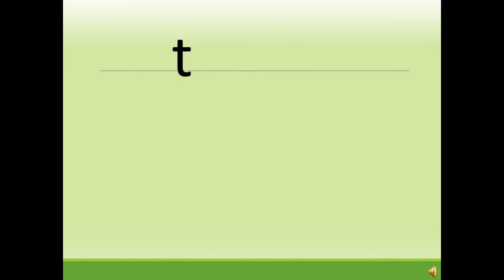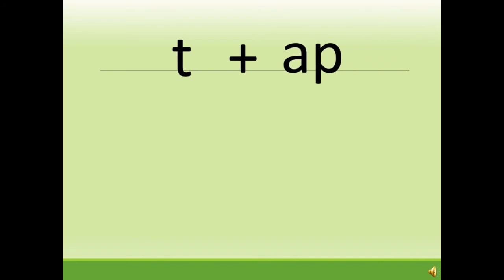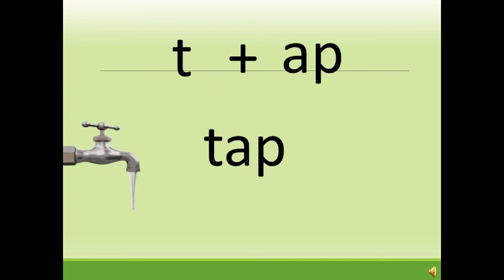Now coming to our last slide. Tell me, which letter can you see on the screen? Correct — you can see the letter T. And T says 't.' So when we add 'ap' to T, T plus ap, what word do we get? Correct — it is t-ap: tap. T-ap: tap.